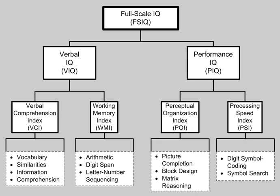The point scale concept significantly changed the way testing was done by assigning credits or points to each item. This had two large effects. First, this allowed items to be grouped according to content. Second, participants were able to receive a set number of points or credits for each item passed. The result was a test that could be made up of different content areas or subtests with both an overall score and a score for each content area. In turn, this allowed for an analysis of an individual's ability in a variety of content areas, as opposed to one general score.